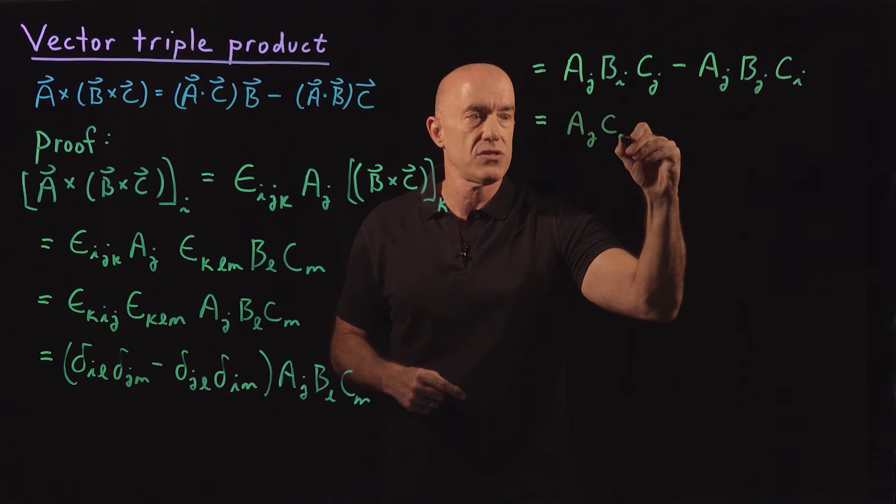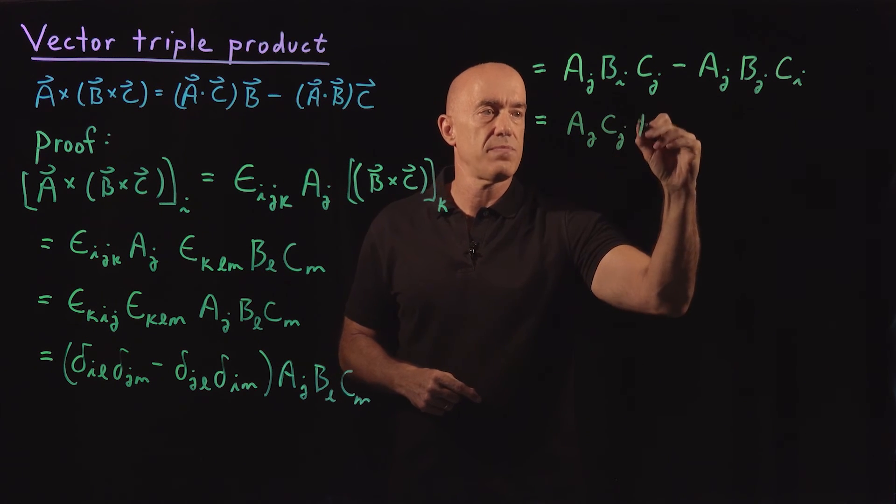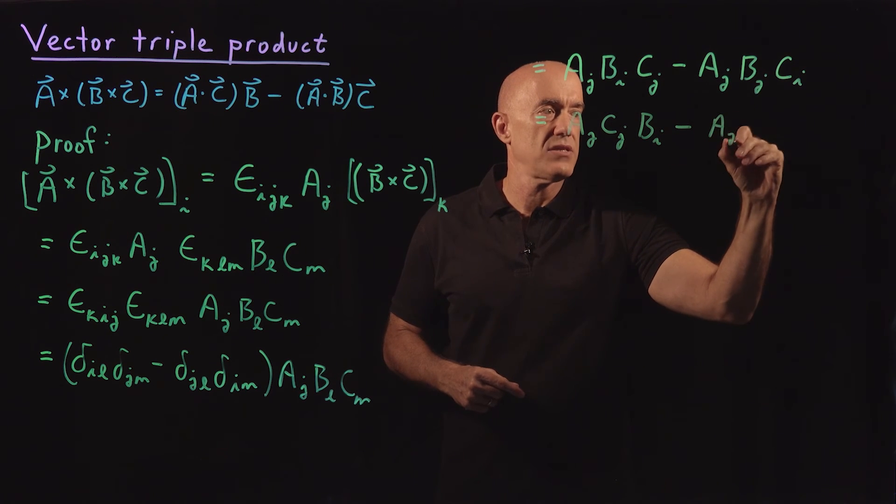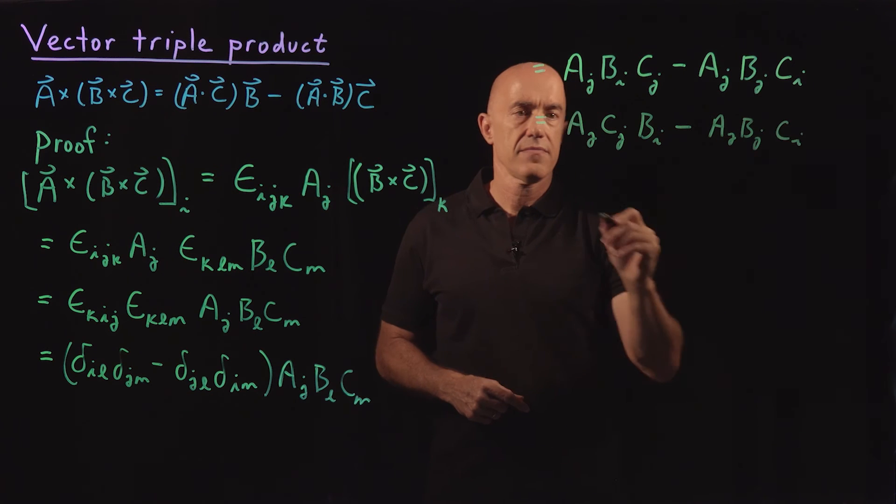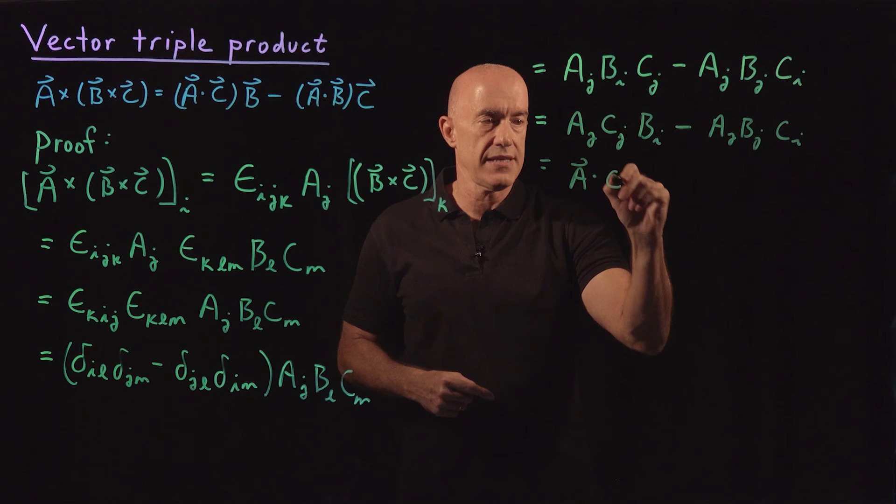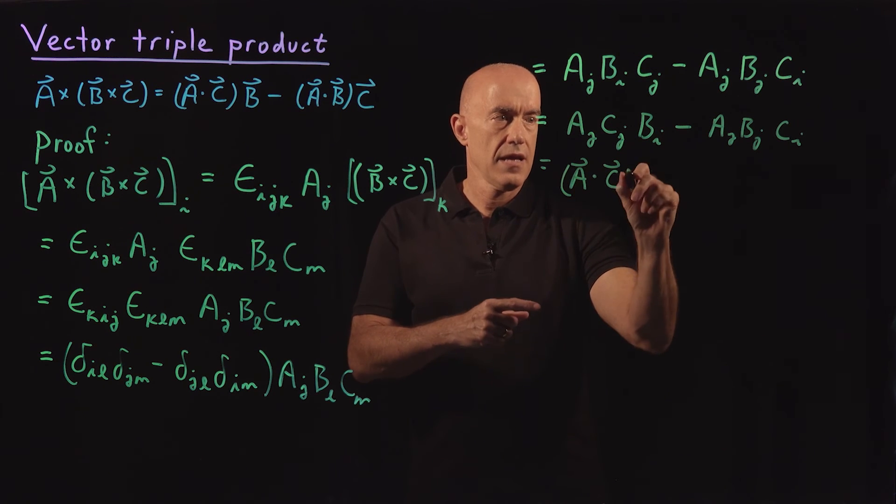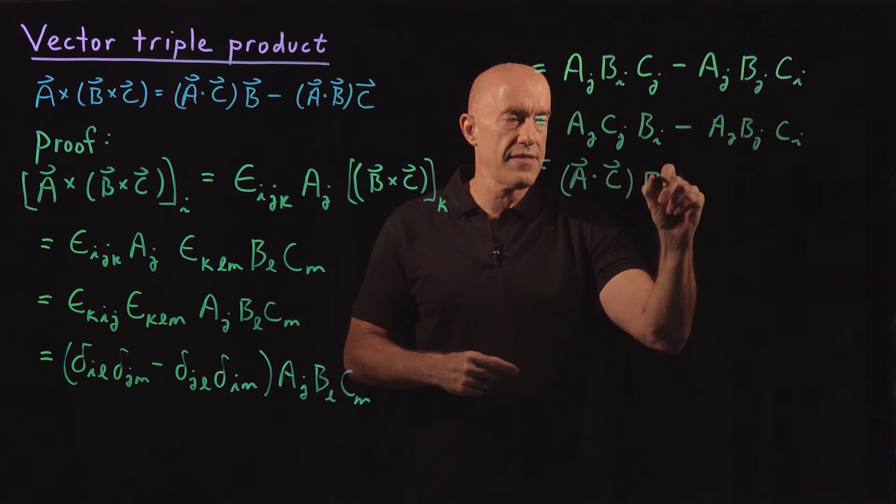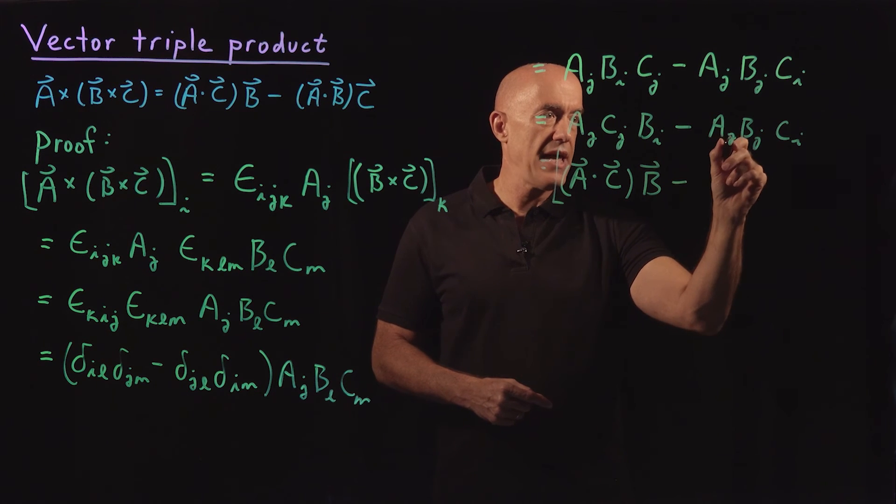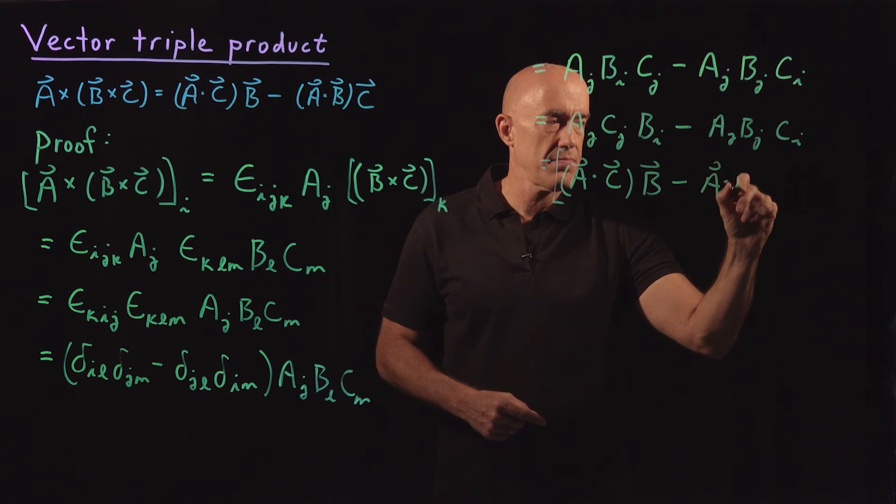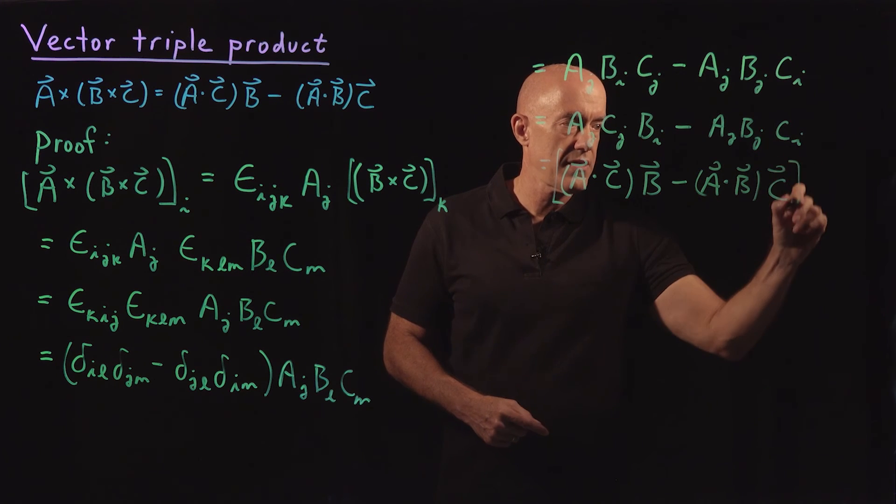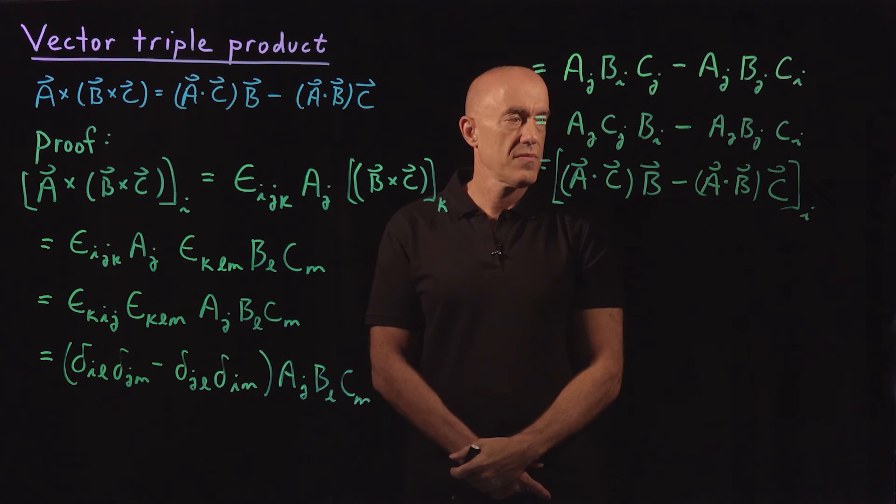This is A_j C_j times B_i, right? And this one is A_j B_j times C_i. A_j C_j is just A dot C. And then B_i is the i-th component of the vector B minus A_j B_j is A dot B, and C_i is the i-th component of the vector C.